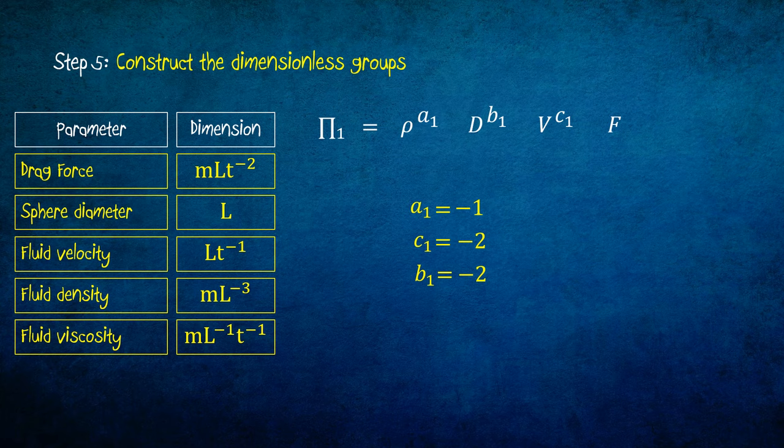Let's replace the power coefficients in the pi 1 with these values. The final expression for pi 1 is f over rho d squared v squared.